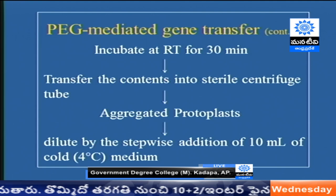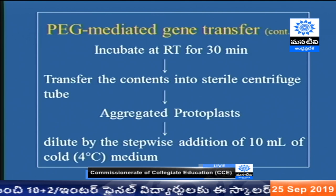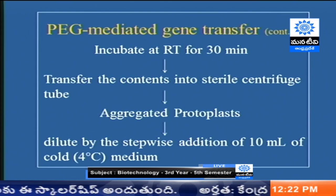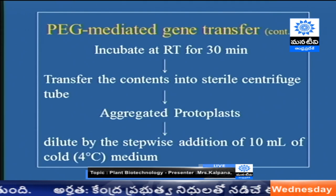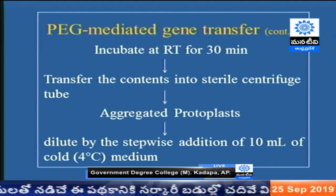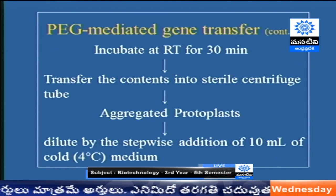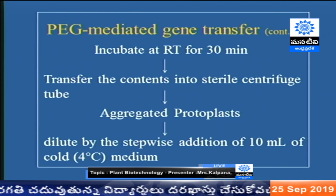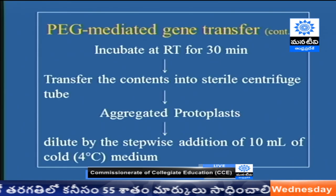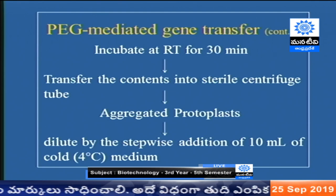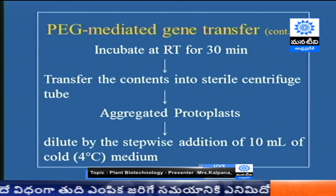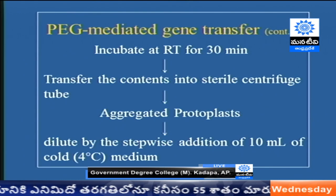After adding all reagents, we add 1 ml of medium with polyethylene glycol and incubate the protoplasts at room temperature for 30 minutes. Then we transfer all contents into a sterile centrifuge tube. At this stage we can see clearly aggregated protoplasts — all protoplasts come together. We have to dilute them without damaging any protoplasts, first by adding only 2 ml of culture medium for 5 minutes, then repeating 5 to 6 times at 4 degrees centigrade.